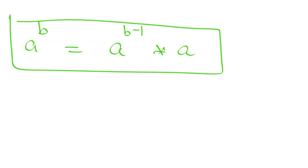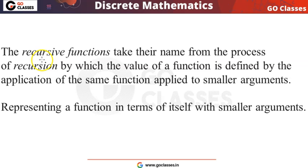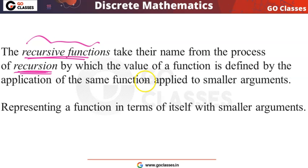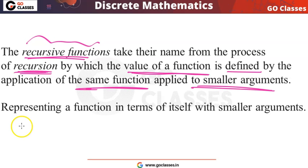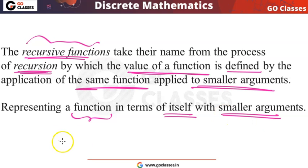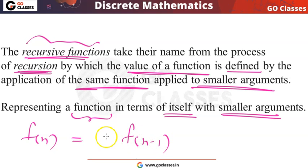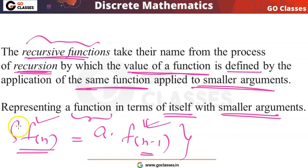So, what I want to say — this is the final definition of recursive function. Recursive function — the name comes from recursion. Recursion means the value of a function is defined by the application of the same function applied to smaller arguments. In simple words, recursion means a function represented in terms of itself with smaller arguments. A function which is represented in terms of itself with smaller argument — this type of function is called a recursive function.